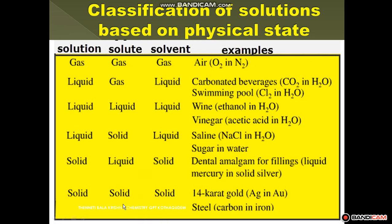Next is solid in solid solution. Alloys are a homogeneous mixture of two or more metals, both present in solid state. Both solute and solvent are in solid state. Example: 9-carat gold is a mixture of silver in gold. Steel is a mixture of carbon in iron.